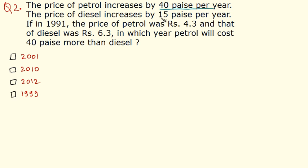The question says the price of petrol increases by 40 paise per year and the price of diesel increases by 15 paise per year. In 1991, the price of petrol was Rs. 4.3 and diesel was Rs. 6.3. In which year will petrol cost 40 paise more than diesel? Let's first convert 40 paise into rupees: 40 paise equals Rs. 0.40. It's easier to deal completely in rupees.